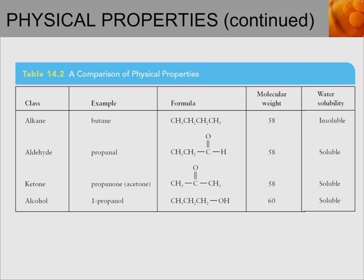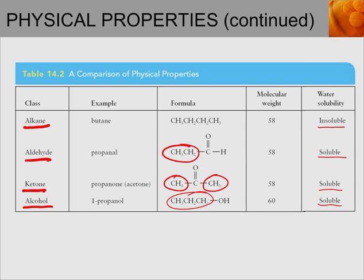A solubility chart comparing those same molecules shows that the alkane is not capable of hydrogen bonding, so it is insoluble in water. But the aldehyde, ketone, and alcohol are all capable of hydrogen bonding with water, so they are all soluble. However, solubility depends on how large the alkyl groups are — if they're too long, that decreases solubility because the molecule starts to behave similarly to an alkane.